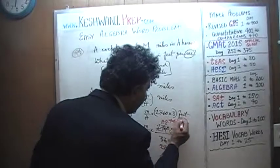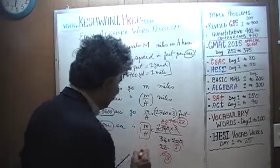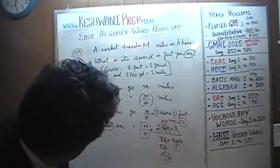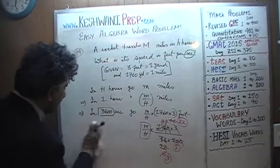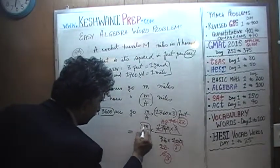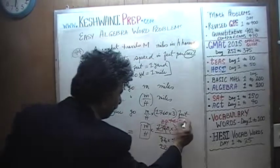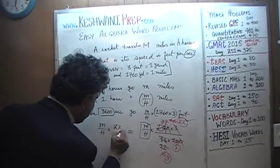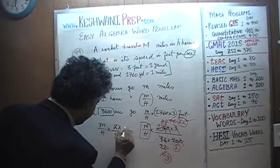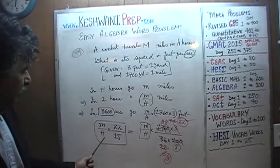The answer is 22 over 3 times 5 times m over h. So the final answer is 22m over 15h.